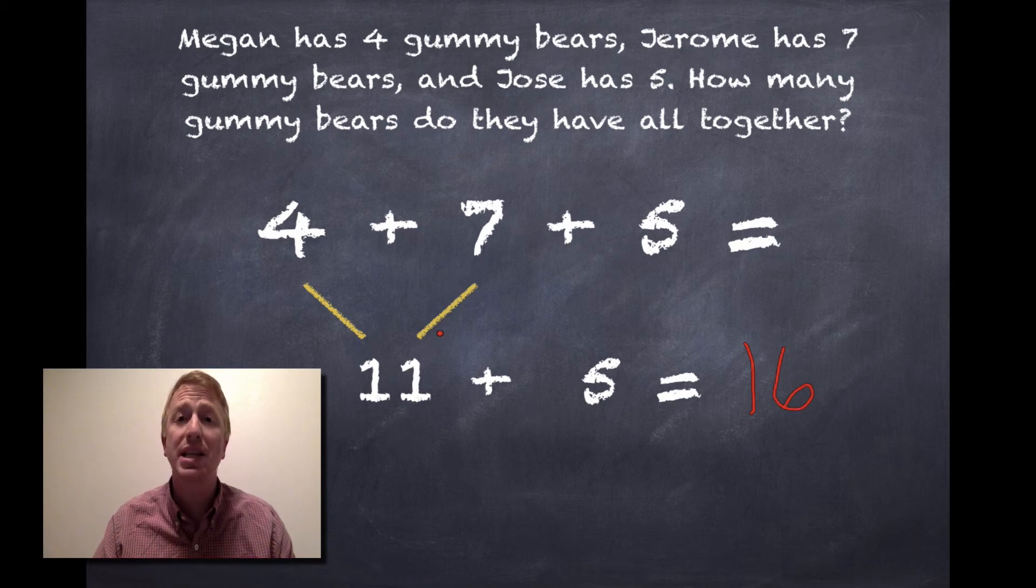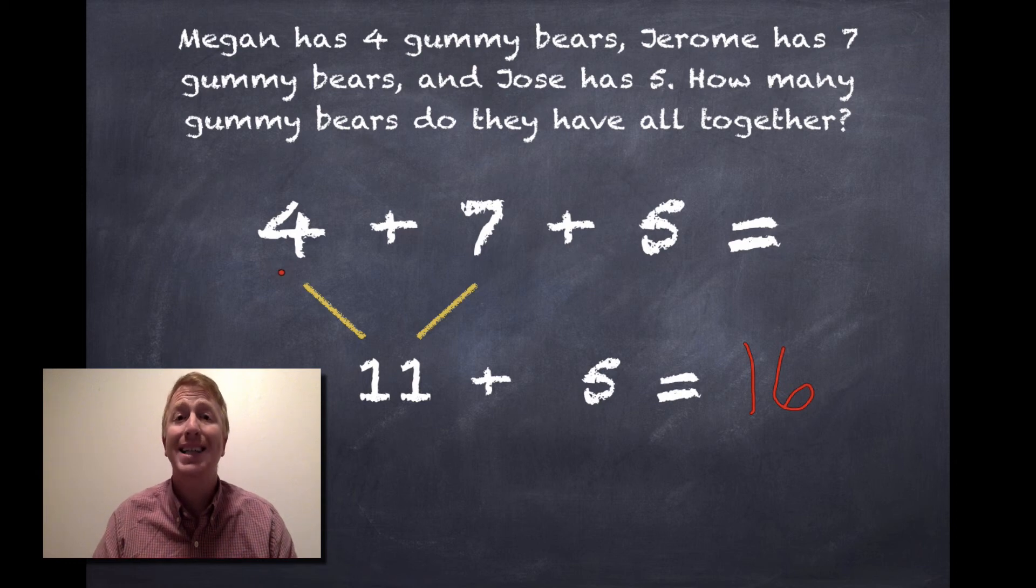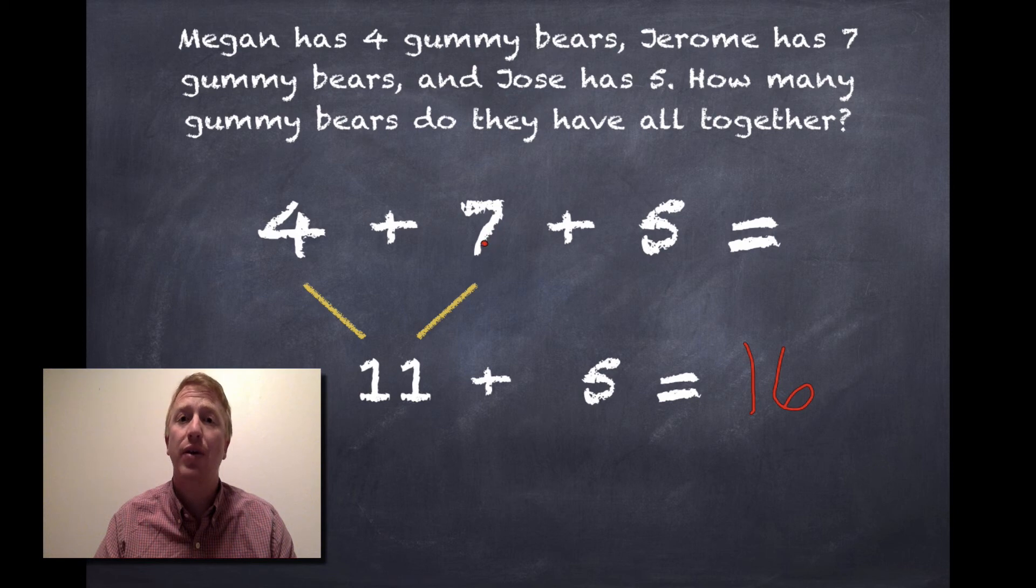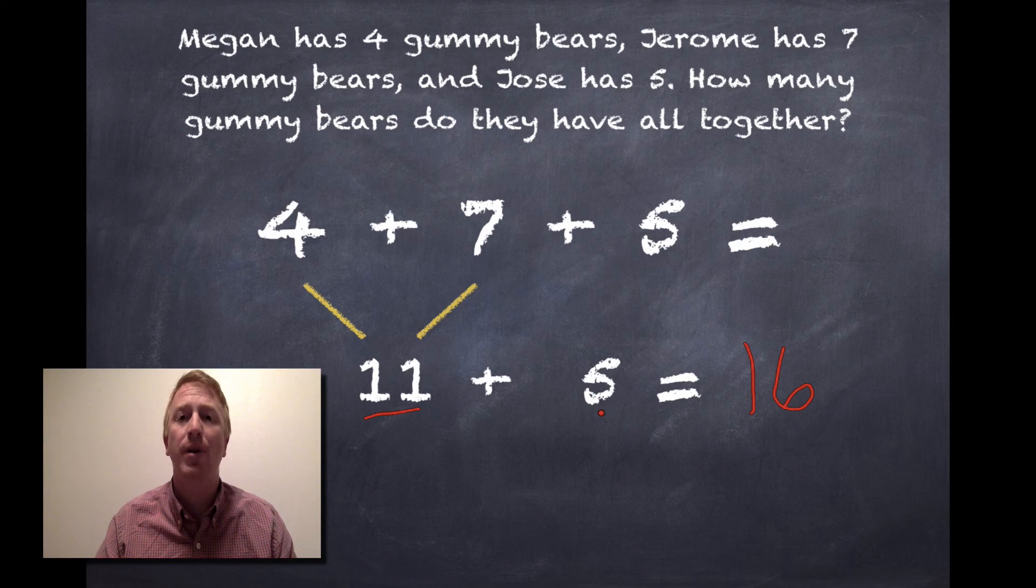When you're doing this method, try your best to think about it in steps. We're going to add the first two numbers together first. Then, the answer that we get, we'll add to our final number. That way, we always get to the right answer.